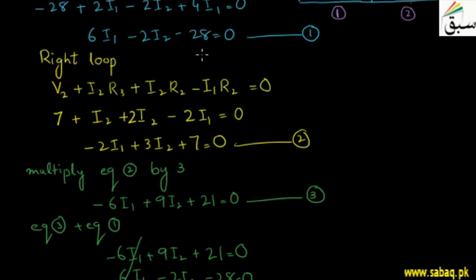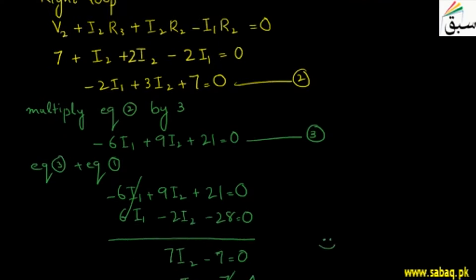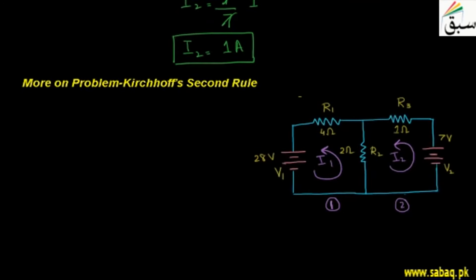For example, I take equation number 1, which is 6I1 minus 2I2 minus 28 equals 0. So I will write it again. What was our equation number 1? Equation number 1, we have minus 28 plus 6I1, 6I1 minus 2I2 equals to 0. Now here the value of I2, I will put 1A.